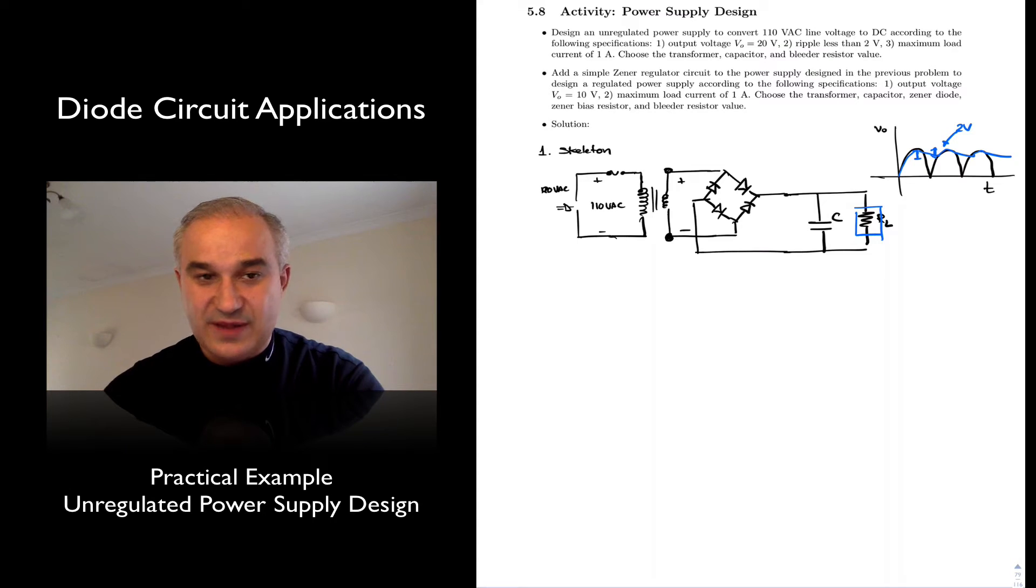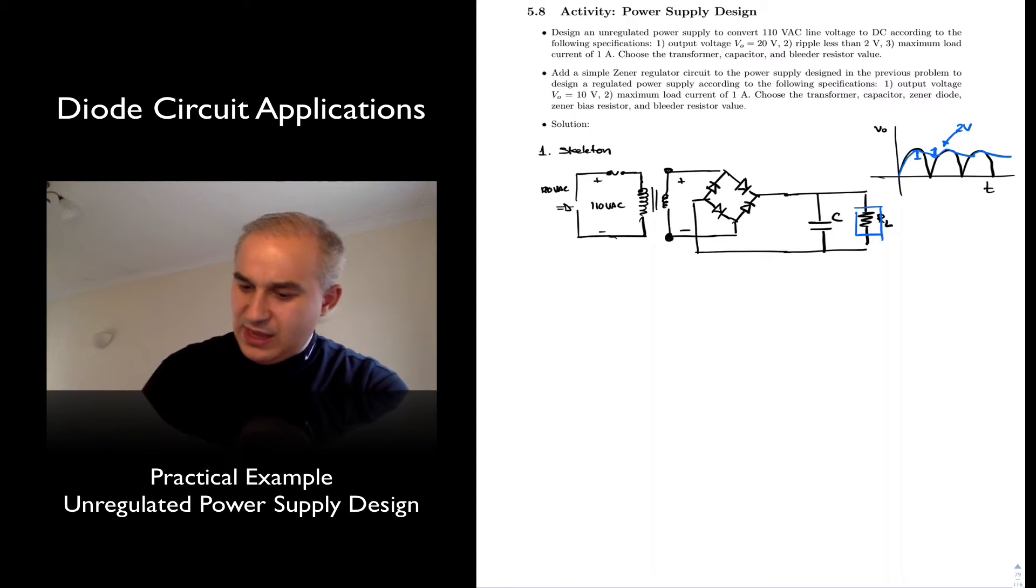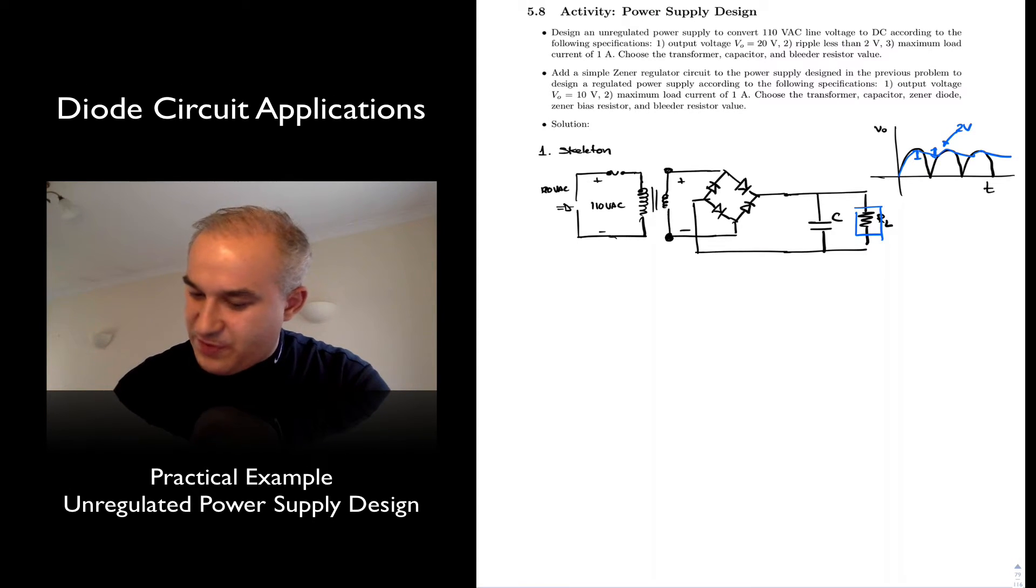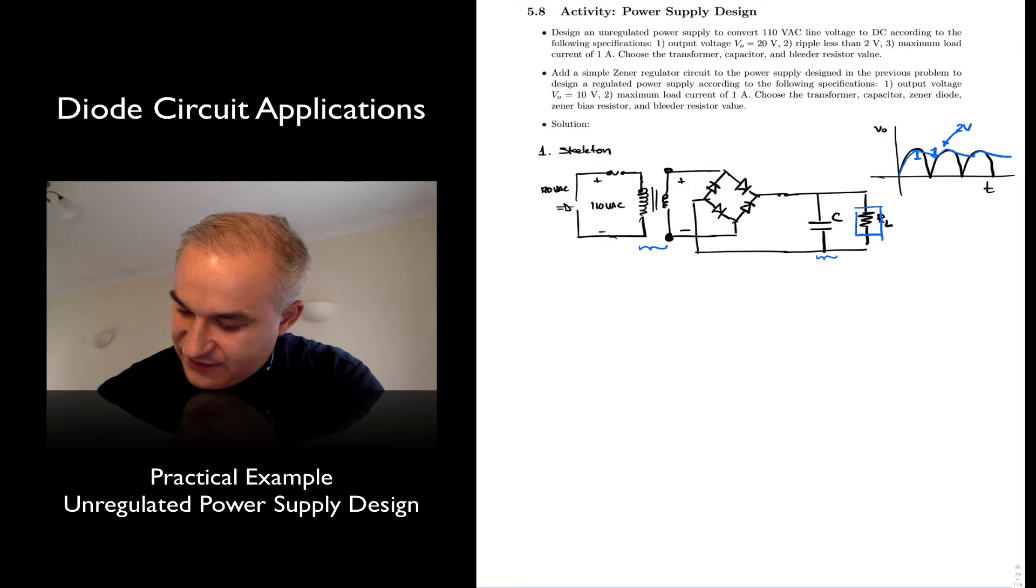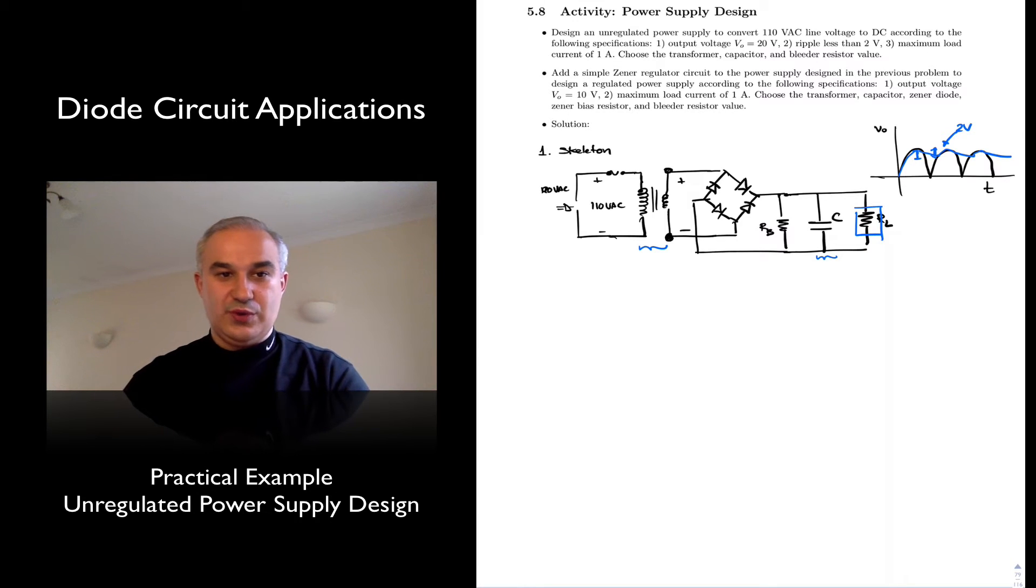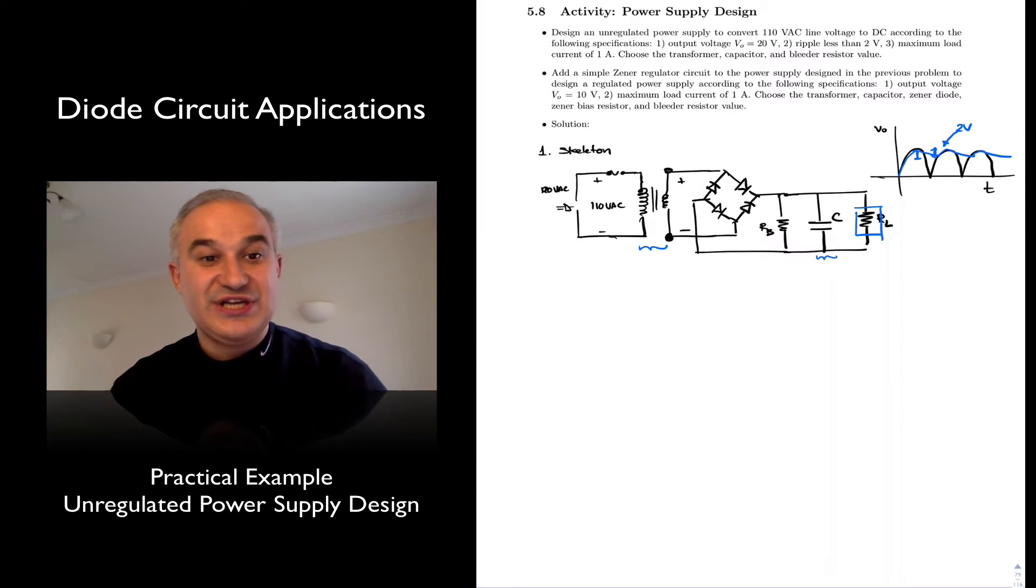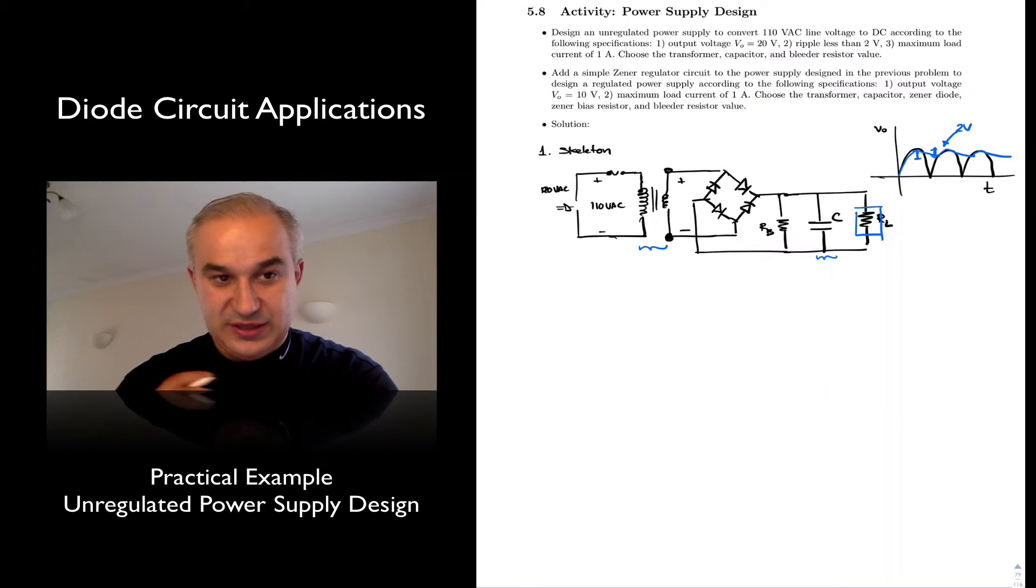So that's going to affect the value of the capacitor. We need to choose the transformer, so the transformer we are going to select it, the capacitor, and also the bleeding resistor value. We want to have here a resistor value RB, that if we disconnect the load, we actually are going to discharge C when load is disconnected. So this is our topology of the circuit.